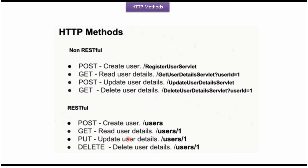To update user details we have to use PUT method, and in the body of the request we have to specify user information like user name, email, age etc. Here you can see the URI: users is the collection and in the path parameter we have to specify the user ID which we want to update. To delete user details we have to use DELETE method, and the URI is users collection slash the user ID which we want to delete.